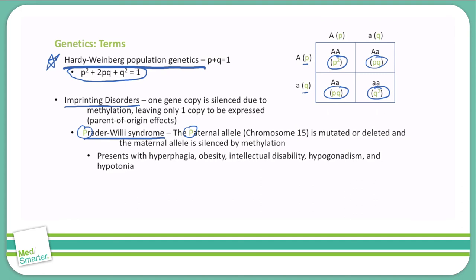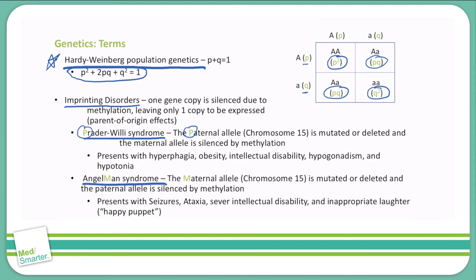Angelman syndrome, you see the M is highlighted here. That is a maternal mutation or deletion on chromosome 15 that causes the issue here. This is seen with seizures, ataxia, severe intellectual disability, and inappropriate laughter. We call this the happy puppet syndrome.